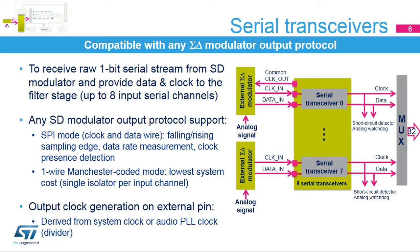A synchronization detection feature is also available in Manchester mode. Manchester mode also offers the lowest system cost in case of optical isolation of the sigma-delta modulator, where only one single isolator per input channel is necessary. The DF-SDM clock features a clock output signal to drive the sigma-delta modulator. It can be used as a source for the SPI clock input by internal interconnection, in order to save external pins.